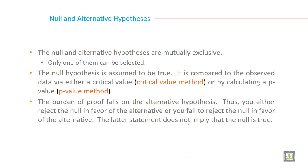The burden of proof falls on the alternative hypothesis. Thus, you either reject the null in favor of the alternative, or you fail to reject the null in favor of the alternative. The latter statement does not imply that the null is true.